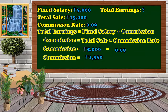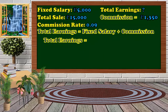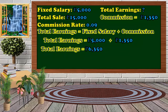Next, we solve for our total earnings since we have the value for the commission. The total earnings is equal to the fixed salary, which is 5,000 pesos, plus the commission, which is 1,350 pesos. Getting the sum, the total earnings equals 6,350 pesos.